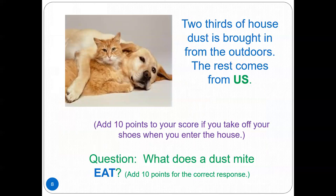About two-thirds of household dust is brought in from outdoors and the rest comes from us. Use a five-step system to control dust: have a hard-surface walkway such as a sidewalk or brick pavers, an outdoor mat in front of your door to remove dirt, an indoor carpet pad to trap dust, hard-surface floors such as vinyl, wood, or tile flooring, and take your shoes off at the door. Give yourself 10 points if you take your shoes off when you enter your house.